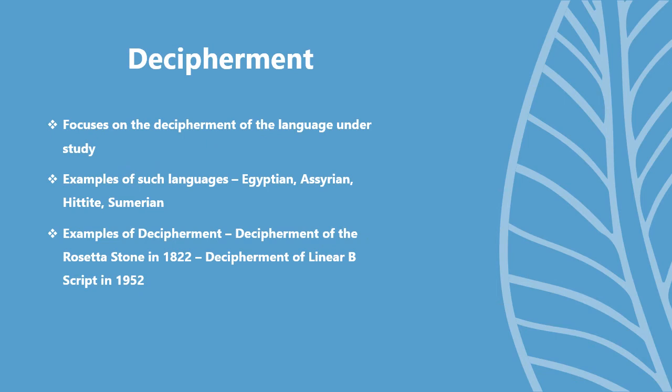Decipherment, as the name suggests, is a branch of philology that focuses on the decipherment of the language being studied. For example, Egyptian, Assyrian, Hittite, Sumerian, and Ugaritic languages are studied with the aim of deciphering that particular language. Notable examples include the decipherment of the Rosetta Stone in 1822 and the decipherment of the Linear B script in 1952.